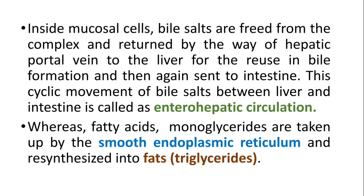Inside mucosal cells, bile salts are freed from the complex and returned by way of the hepatic portal vein to the liver for reuse in bile formation, and then again sent to the intestine. This cyclic movement of bile salts between the liver and intestine is called enterohepatic circulation.